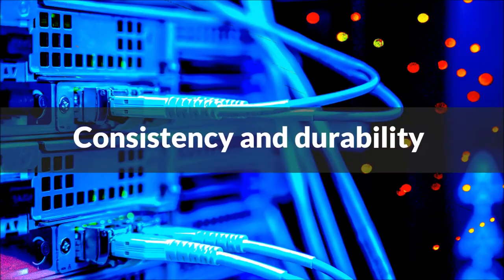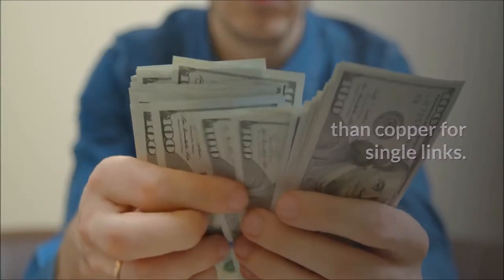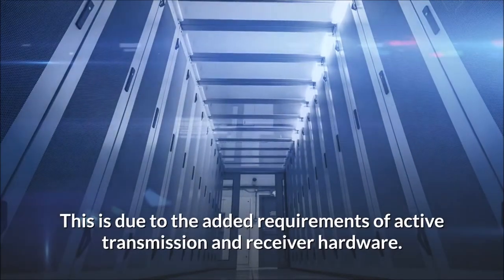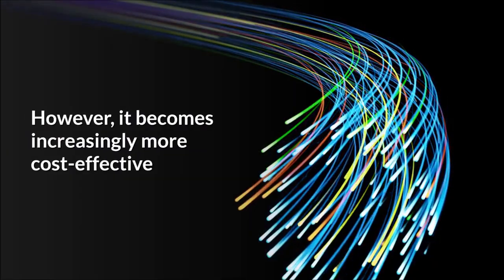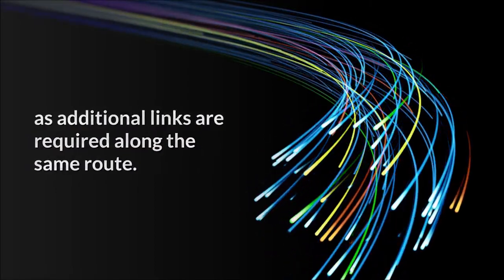Consistency and Durability. Fiber optic wiring is generally more expensive than copper for single links. This is due to the added requirements of active transmission and receiver hardware. However, it becomes increasingly more cost effective as additional links are required along the same route.